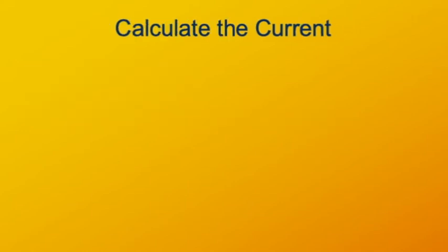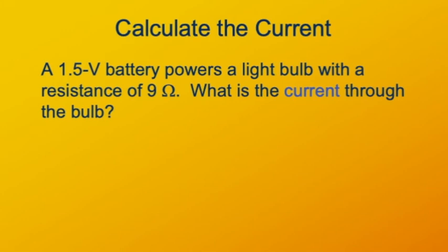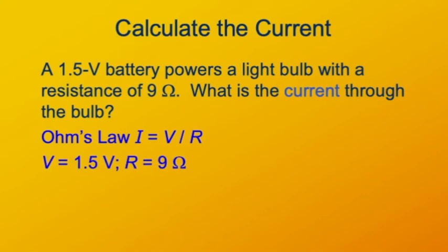Let's see if we can use Ohm's law. Here we have a scenario where a 1.5 volt battery powers a lightbulb that has a resistance of 9 ohms. So we're asked to find the current. So we're given V, that's 1.5 volts. We're given R, that's 9 ohms. We want to find I. Ohm's law tells us I equals V over R, so we have to take our V, 1.5 volts, divided by R, 9 ohms. That ends up being 1 sixth of an ampere.